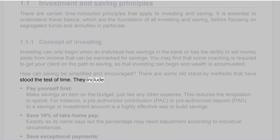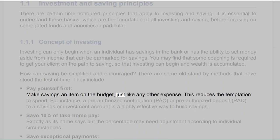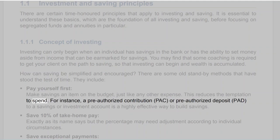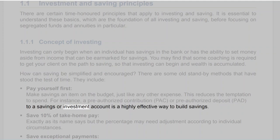Saving methods include: Pay yourself first — make savings an item on the budget, just like any other expense. This reduces the temptation to spend. For instance, a pre-authorized contribution (PAC) or pre-authorized deposit (PAD) to a savings or investment account is a highly effective way to build savings.